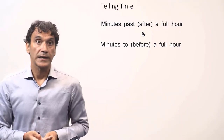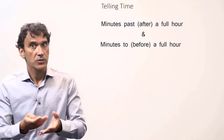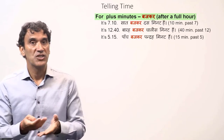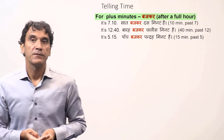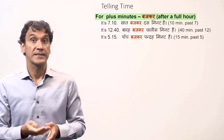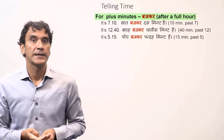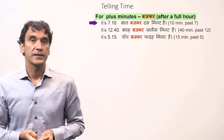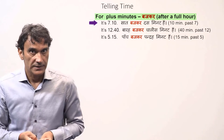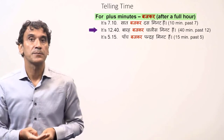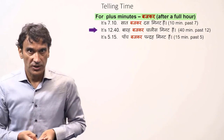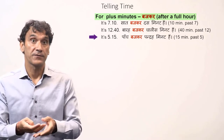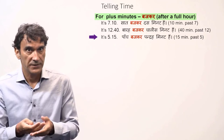To tell minutes after the full hour, the word Baje is used. The word minute, usually in plural, is the subject, so the verb takes the plural form hain. For example: saad baje kar das minute hain — it's ten minutes past seven. Bara baje kar chalise minute hain — it's forty minutes past twelve. Paanj baje kar pandrah minute hain — it's fifteen minutes past five.